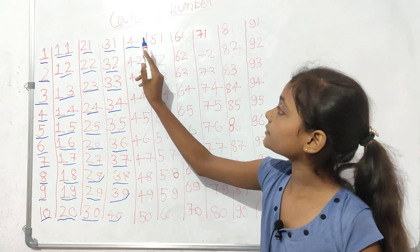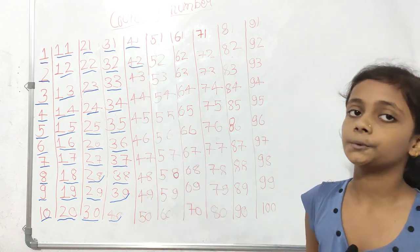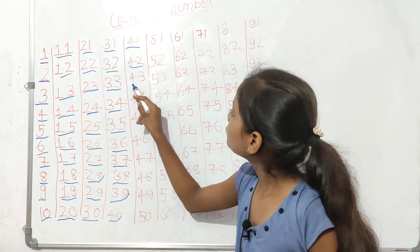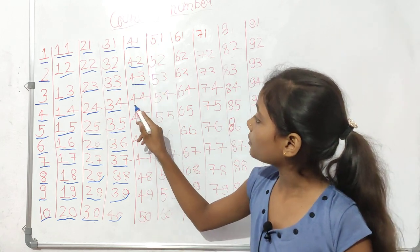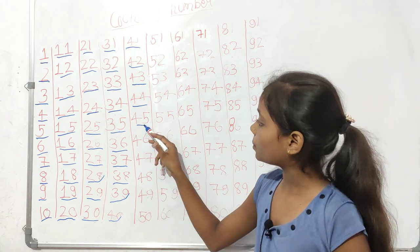Okay? Forty-one, forty-two, forty-three, forty-four, forty-five.